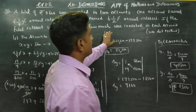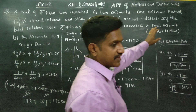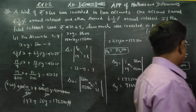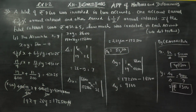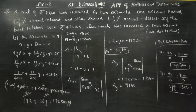How much was invested in each account? The amount invested in the first account is Rs.7,300. The amount invested in the second account is Rs.1,300. Okay, thank you as always.